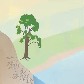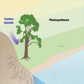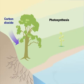For example, one way carbon dioxide is taken out of the atmosphere is through photosynthesis. Plants take carbon dioxide out of the air and use this carbon to build their leaves, stems, and roots. That means plants store carbon.